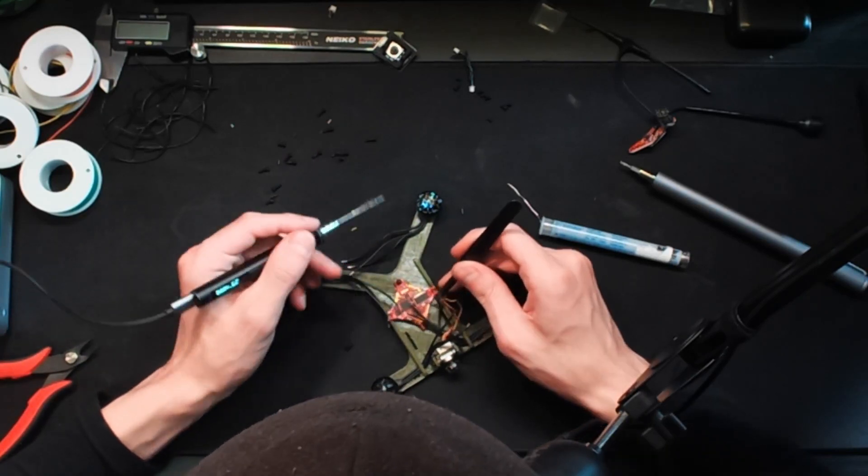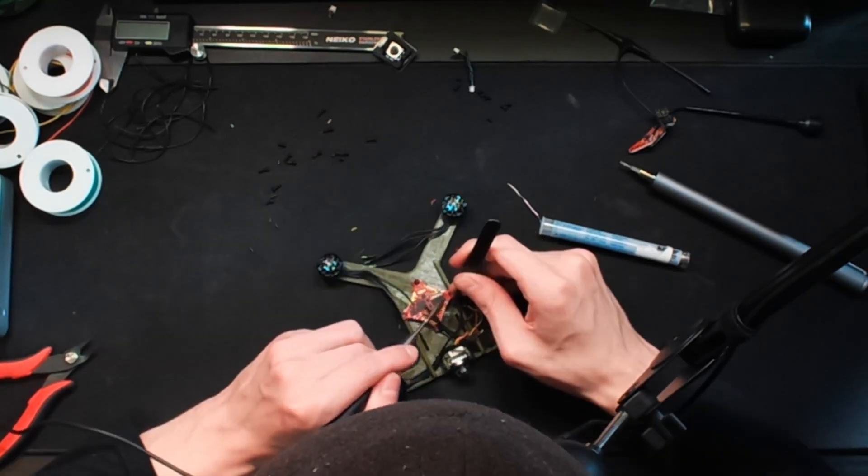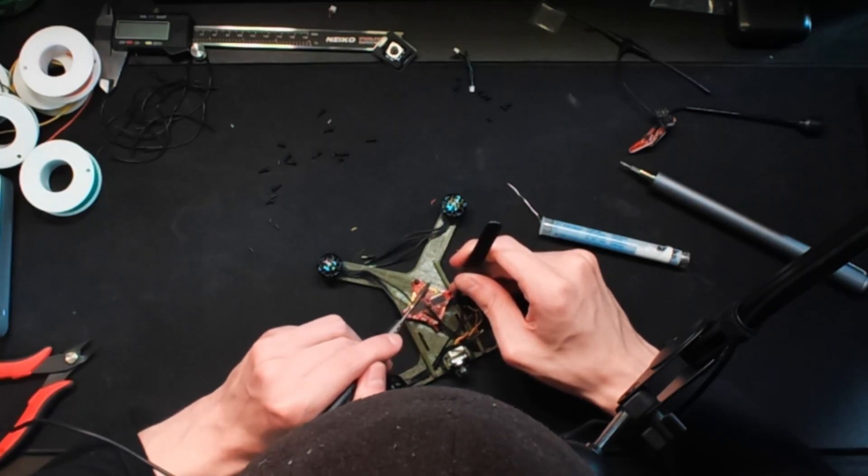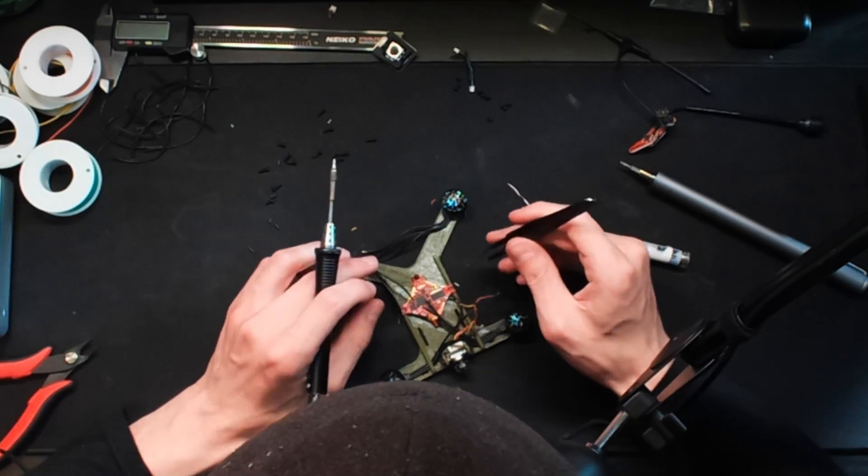So for now, just solder the motor wires in whichever order you want, and later if one motor is spinning the wrong direction, all you have to do is flip any two motor wires for that motor, and it will reverse direction.